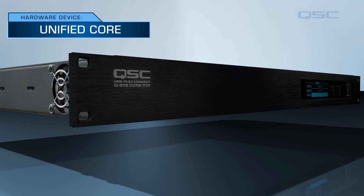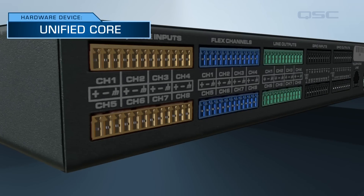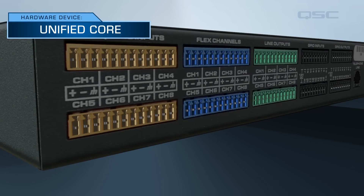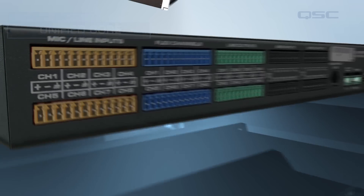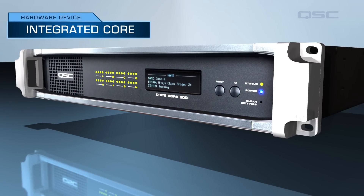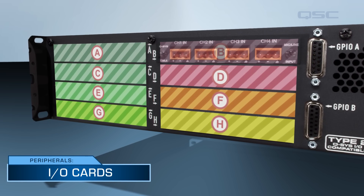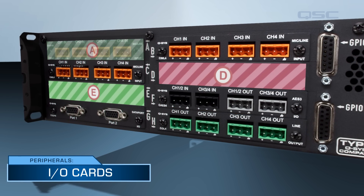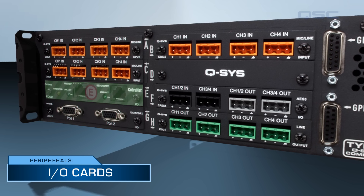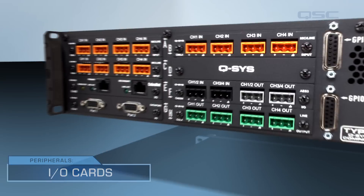Smaller systems might use a unified Q-SYS Core, which has built-in analog connections on the rear panels to bring in the audio sources and send to amplifiers and loudspeakers. Medium-sized systems might use the Q-SYS Integrated Core, which has eight card slots, allowing for customized I/O solutions. There are many different kinds of I/O cards, which can send and receive different types of audio or interface with various other types of audio networks.